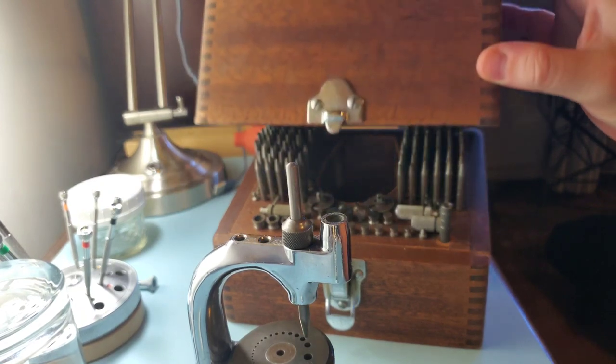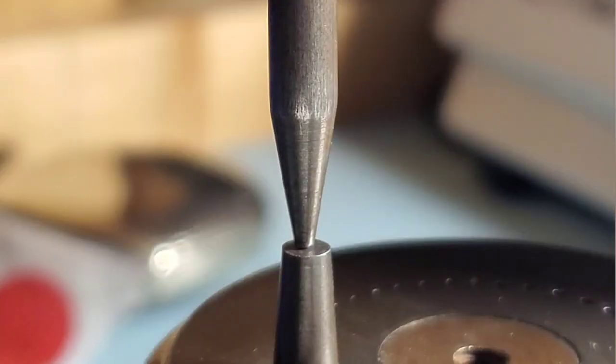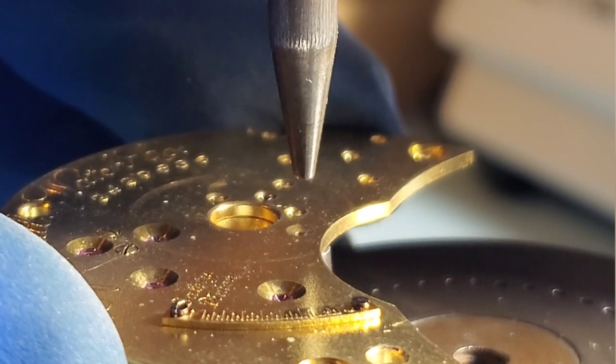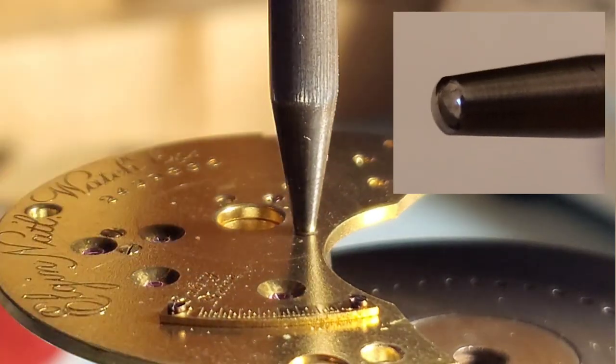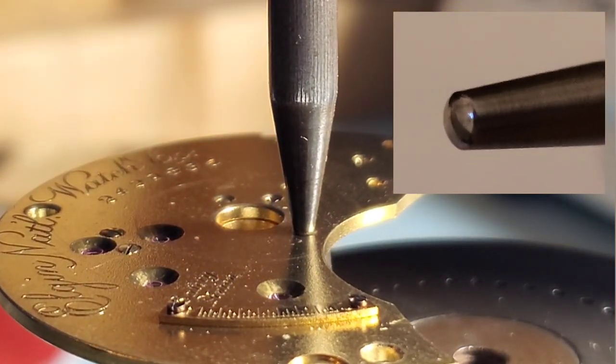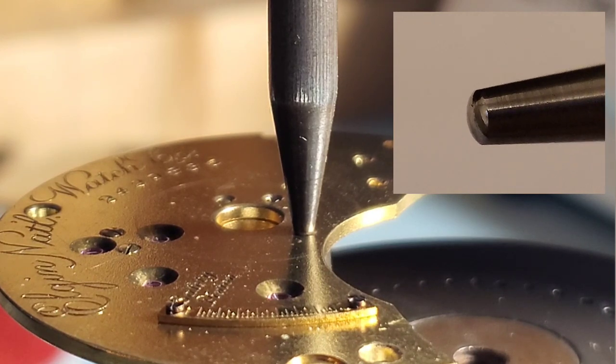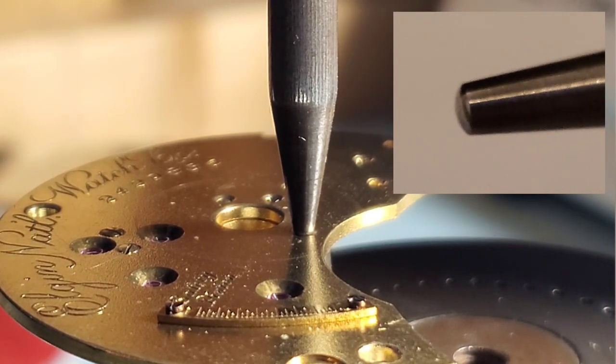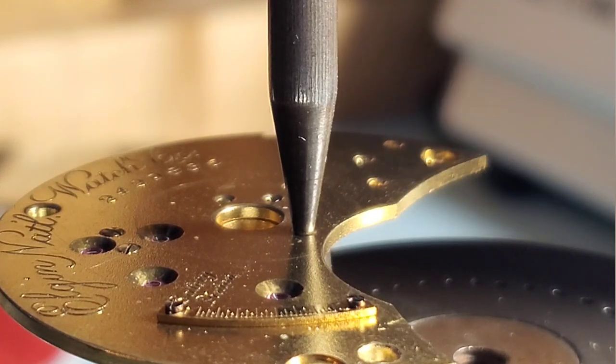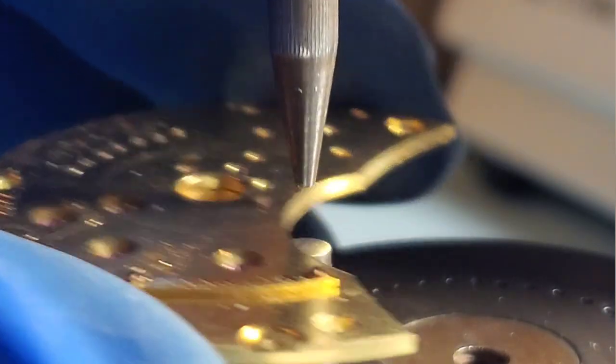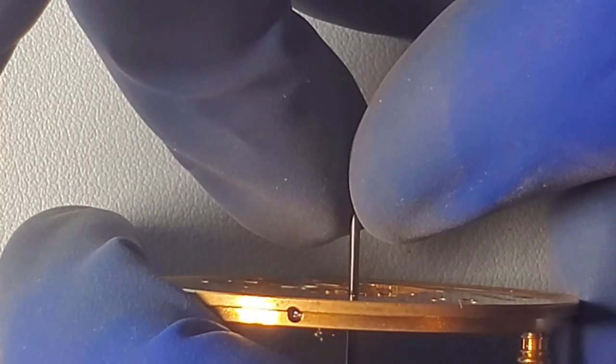So I got out my KD staking set. And I set the top plate in that staking set. And with a round punch gently tap that hole closed. Here I'm tapping the stake. And then I'll rotate it and tap it a few more times. And then check how the hole looks.